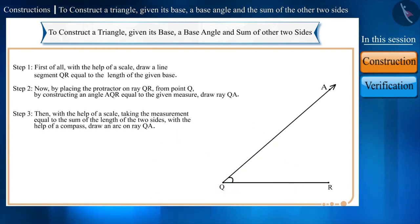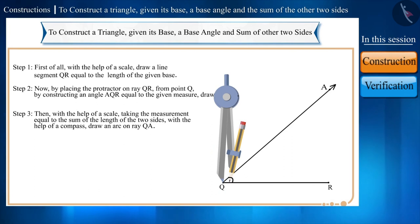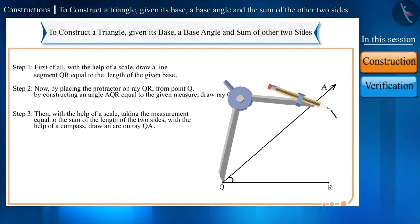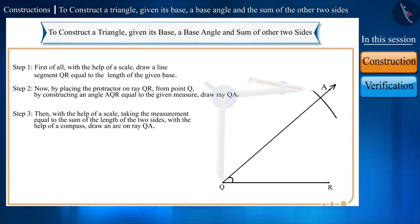Then, with the help of a scale, taking the measurement equal to the sum of the length of the two sides, with the help of a compass, draw an arc on ray QA. Let's name this point as point B. Step 4: Now, let's join point B and point R.